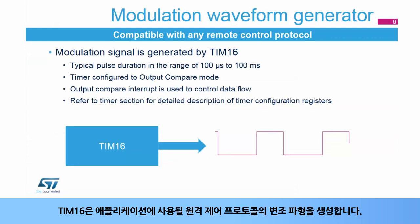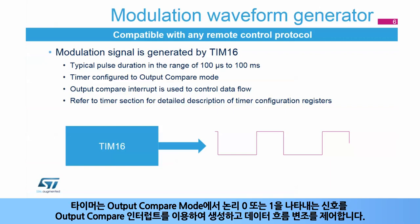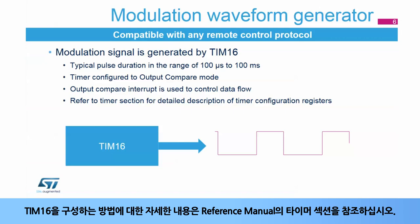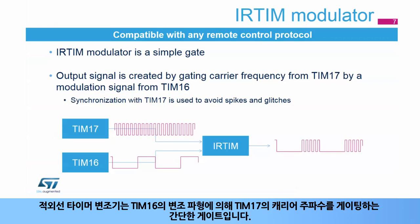Timer 16 generates the modulation waveform for the remote control protocol used in the application. The timer is configured in output compare mode, using the output compare interrupt to generate pulses representing a logical 0 or 1 and control the modulation of the data flow. For a detailed description of how to configure timer 16, please refer to the timer section in the reference manual. The infrared timer modulator is a simple gate, gating the carrier frequency from timer 17 by a modulation waveform from timer 16.